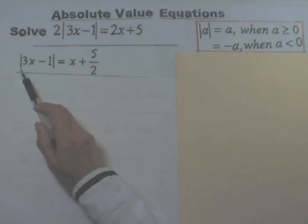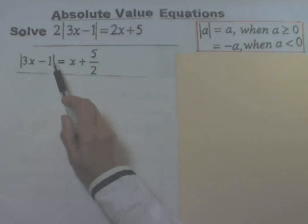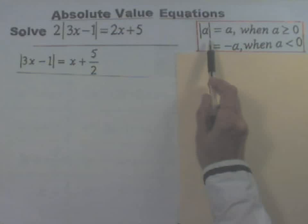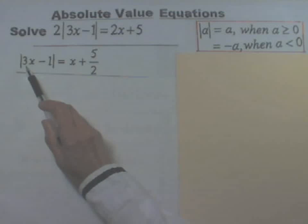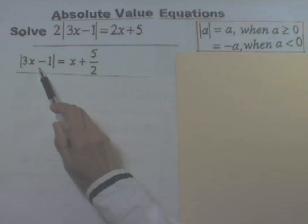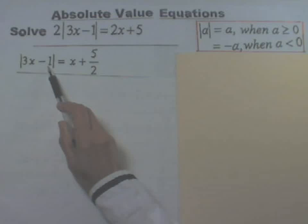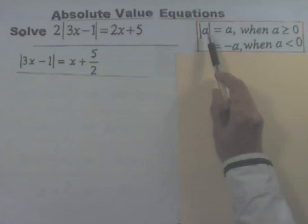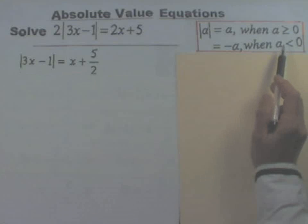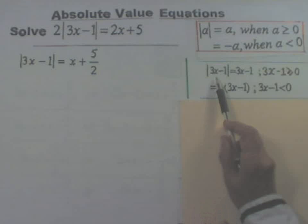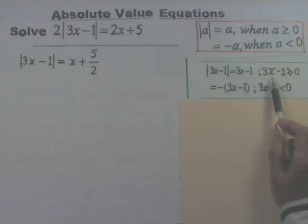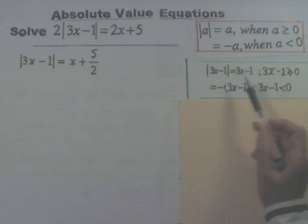In the next step, you need to simplify this absolute value part using the definition. Note, the only difference is that instead of a, you have 3x minus 1. So to simplify the absolute value of 3x minus 1, simply substitute 3x minus 1 wherever you have an a. Absolute value of 3x minus 1 is equal to 3x minus 1 provided 3x minus 1 is greater than or equal to 0, and that is the first line.